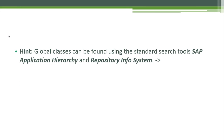As a hint, global classes can be found using the standard search tools: the SAP Application Hierarchy and the Repository Info System. This is very useful when you are programming for a specific application component and you want a class or method that already does something you want to program, instead of doing it from scratch. You can search for the corresponding class.